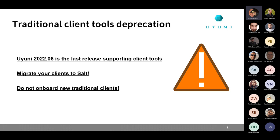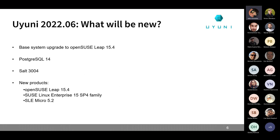Remember that everything traditional clients could do is now possible with Salt as well, and you also have the Salt bundle that Victor will talk about later. Besides that, we have new products — you'll be able to sync and manage openSUSE Leap 15.4, the whole SUSE Linux Enterprise 15 SP4 family, and finally SLED Micro 5.2. The release is most likely happening on Monday, thanks to Stefan who helped fix the problems we had building the EL8 client tools.